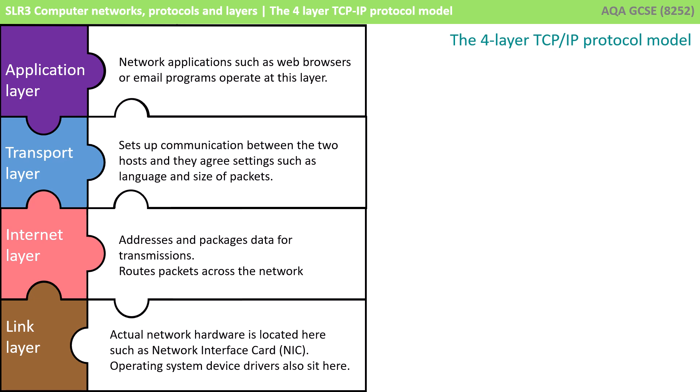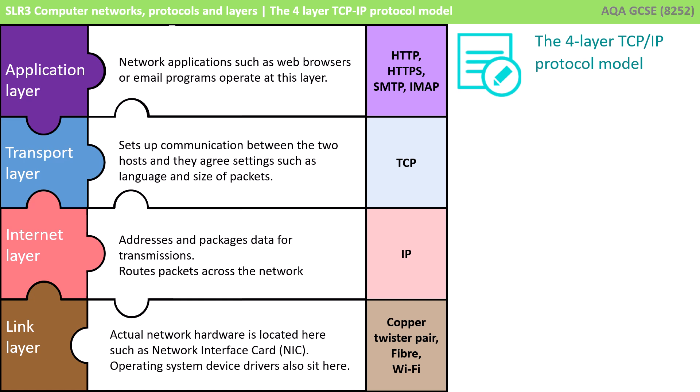Finally, we have the link layer, which is the actual network hardware — things like the network interface card. The operating system and various device drivers also operate at this level. Protocols such as FTP, HTTP, HTTPS and email protocols all operate at the application layer of the TCP/IP model. TCP and UDP operate at the transport layer, whereas the IP protocol operates at the internet layer. At the link layer, it's not protocols as such, but instead the information required to send data across copper, twisted pair, fibre optic or Wi-Fi — such as frequency information.